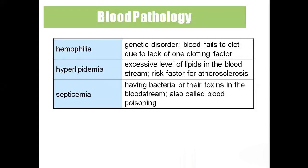Hemophilia is a genetic disorder where the blood fails to clot. For a person with hemophilia, clotting takes around three to five minutes instead of the normal 1.5 minutes, causing more blood loss. It runs in families — hemophilia is a genetic disorder.